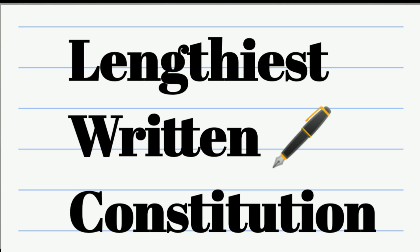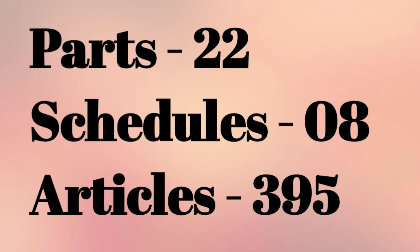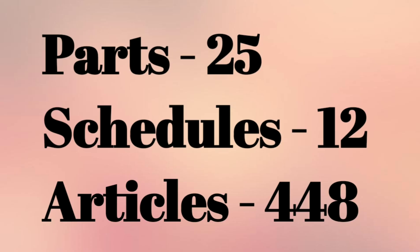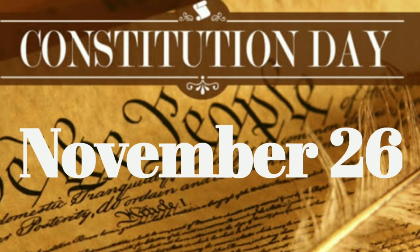Originally, the Constitution contained 22 parts, 8 schedules, and 395 articles. At present, there are 25 parts, 12 schedules, and 448 articles. We celebrate November 26 as Constitutional Day — but not as Republic Day. Do you know why?